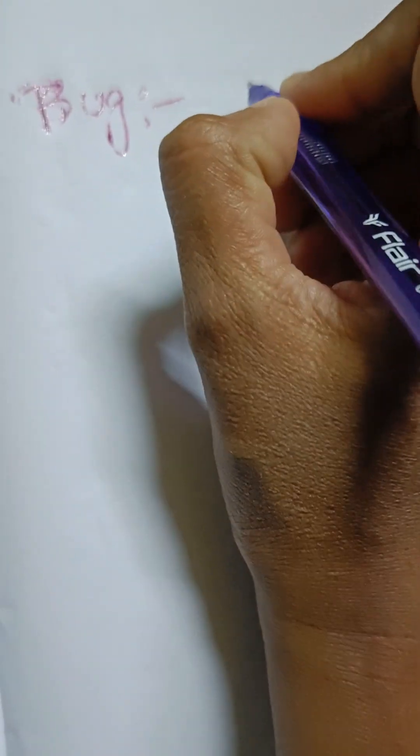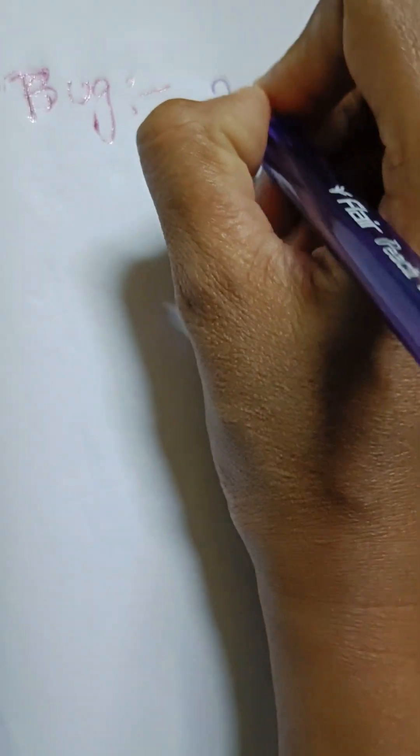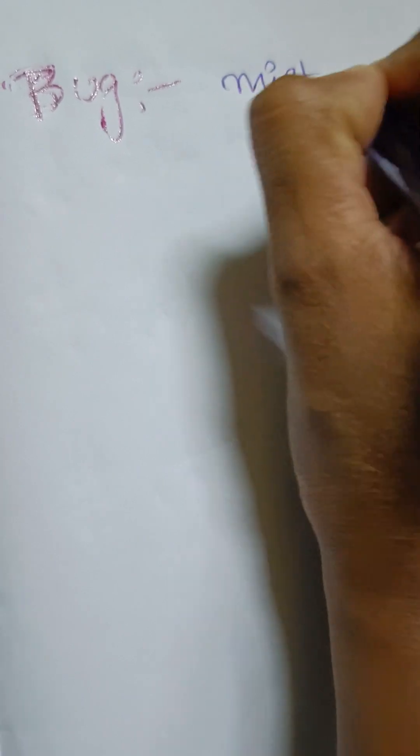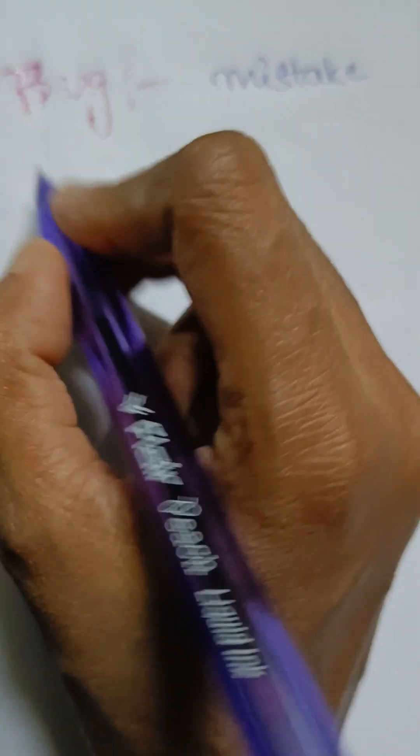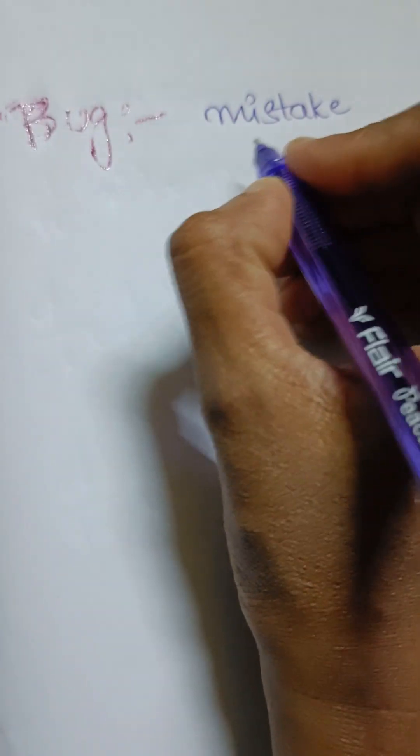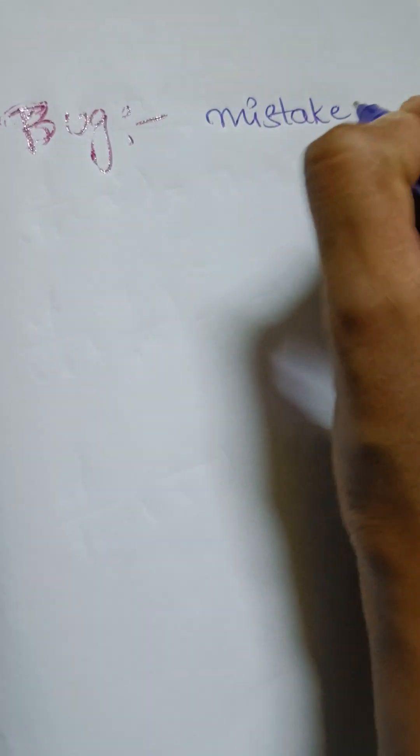So, basic bug — what is it? In programming terminology, a bug means it's a mistake.